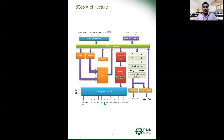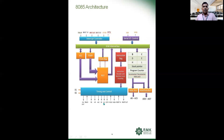If S0 and S1 are both 1 (i.e., 1-1), it is an opcode fetch, where the program counter points to memory and the opcode is fetched and loaded onto the instruction register. If the signal is 1-0, it is a read operation, where data is read from memory or an IO device and loaded onto the instruction register. If it is 0-1, it is a write operation, and 0-0 is a halt operation.